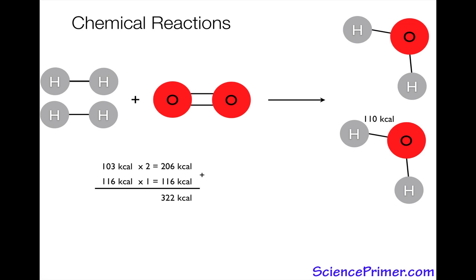Go over to the other side of the reaction and do the same thing with the products. We have one bond type, hydrogen-oxygen single bond. There are four of them. So the energy released when two water molecules are formed, or two moles of water molecules are formed, is 110 kilocalories times four, or 440 kilocalories.